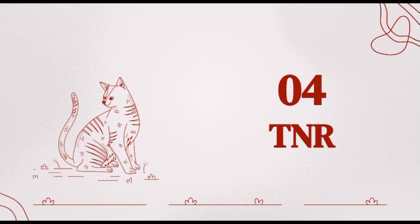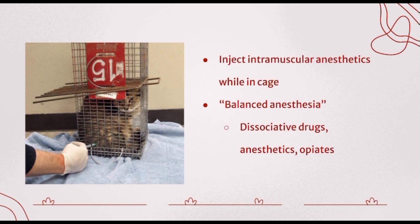Next we are going to talk about the trap neuter release program for stray and feral cats. When the cat is captured, using the board you move the cat to one end of the cage — you can move it vertically or keep it horizontally, whatever works best. That way you have access to the cat, and you will not want to remove the cat before sedating. You want to inject intramuscular anesthetics. The ASPCA veterinarians recommend a balanced anesthesia, which is a concoction of various things depending on the location — including dissociative drugs, anesthetics, and opiates — that will keep the animal pain free and calm all in one intramuscular injection, so you don't expose the cat to multiple injections or an attempt at an IV.